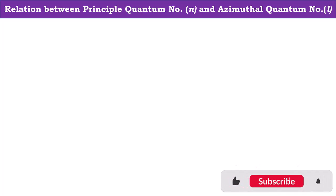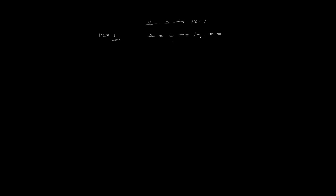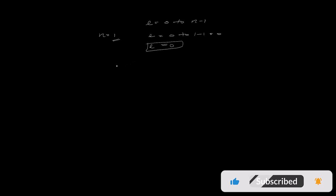Let's see the relation between the principal quantum number and the azimuthal quantum number. If the value of the principal quantum number is N, then the values for the azimuthal quantum number L range from 0 to N-1. For example, if N equals 1, then L ranges from 0 to 1-1, which equals 0. That means only one value is possible for N=1, that is L=0.